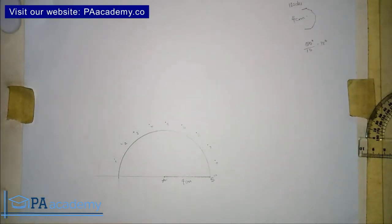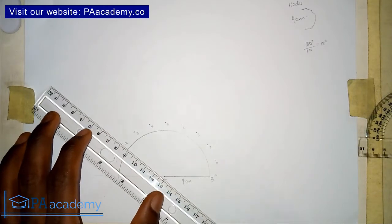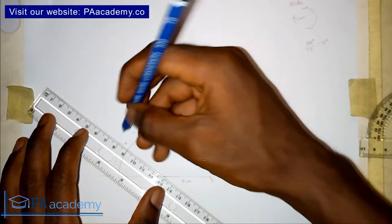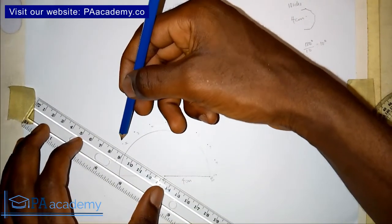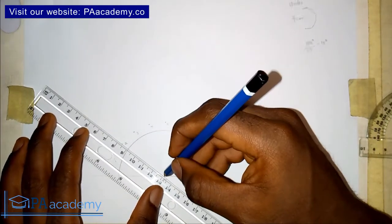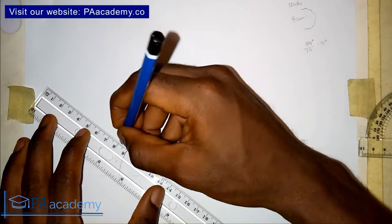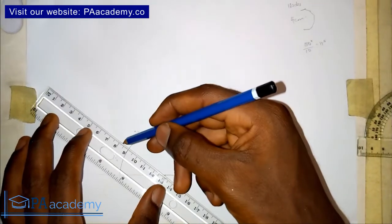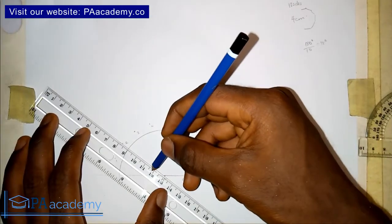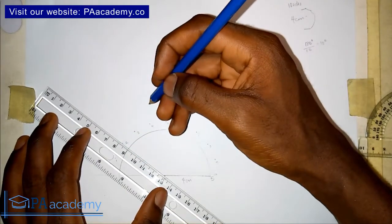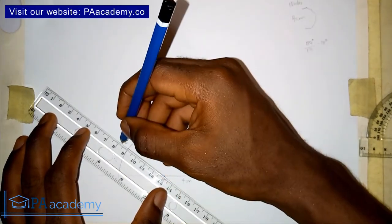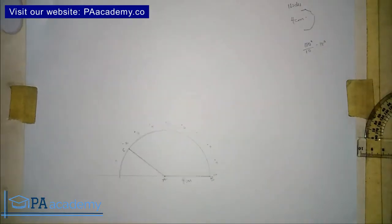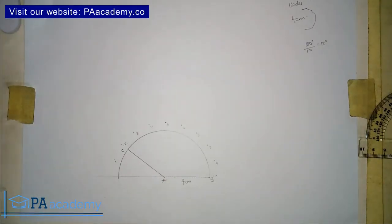Place your ruler on point A aligned through point 2. Since the distance from point A to point 2 is more than 4 cm, just draw a line of 4 cm in that direction — it will touch the semicircle. Let's call that end point C. Line AC represents the second side of the decagon.